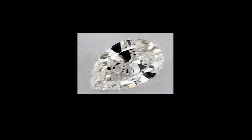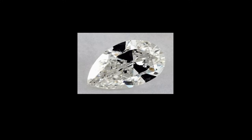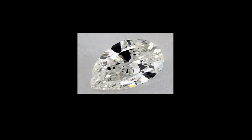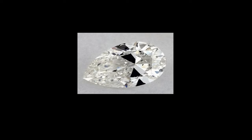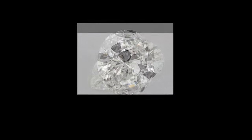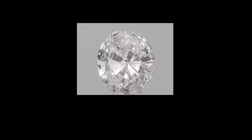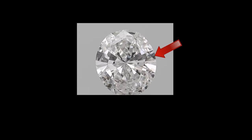Why am I calling the bowtie effect the silent killer of diamonds? It's because this is the one issue that is not listed anywhere on a lab report — GIA, IGI, whatever it may be — but this issue can significantly impact the overall beauty of your diamond. The only way to spot this issue is if you know what it is and what to look for, so that when you put eyes on your diamond, you can identify it and stay away from it.